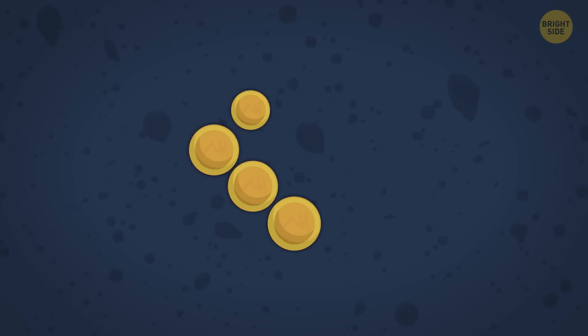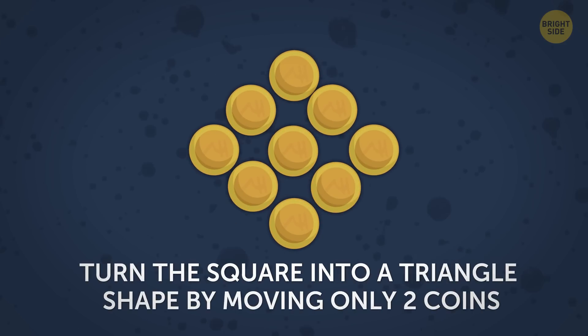Here comes the next puzzle. This square shape consists of 9 coins. The challenge is to turn the square into a triangle shape by moving only 2 coins. You can move them anywhere, but you have to use all 9 coins in the final shape. Can you solve it?